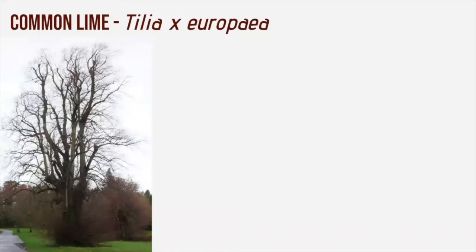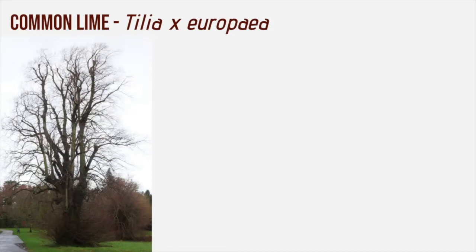Common lime, Tilia × europaea — the word lime, used for trees in Britain, is believed to have come from the old English word 'lind', and in Europe it's still known as the linden tree. Common lime is a natural hybrid of the large and small-leaved limes which grow across Europe, and whenever the two are present together you often get this hybrid. The tree has been planted everywhere, from streets, parks and gardens in Britain.